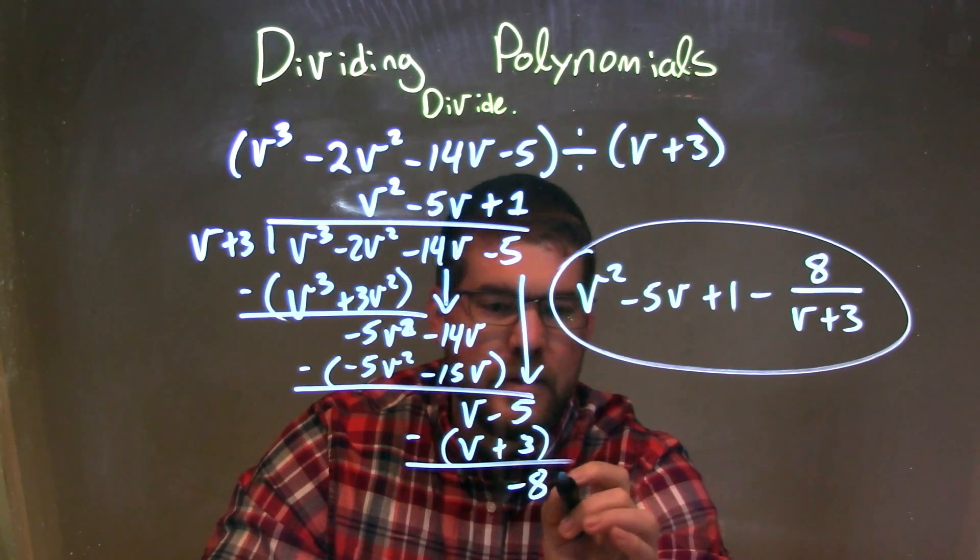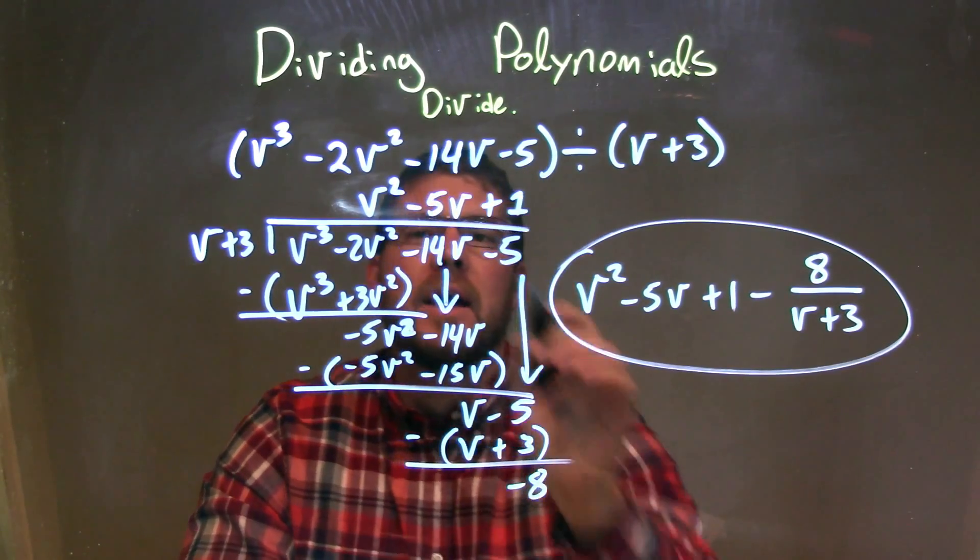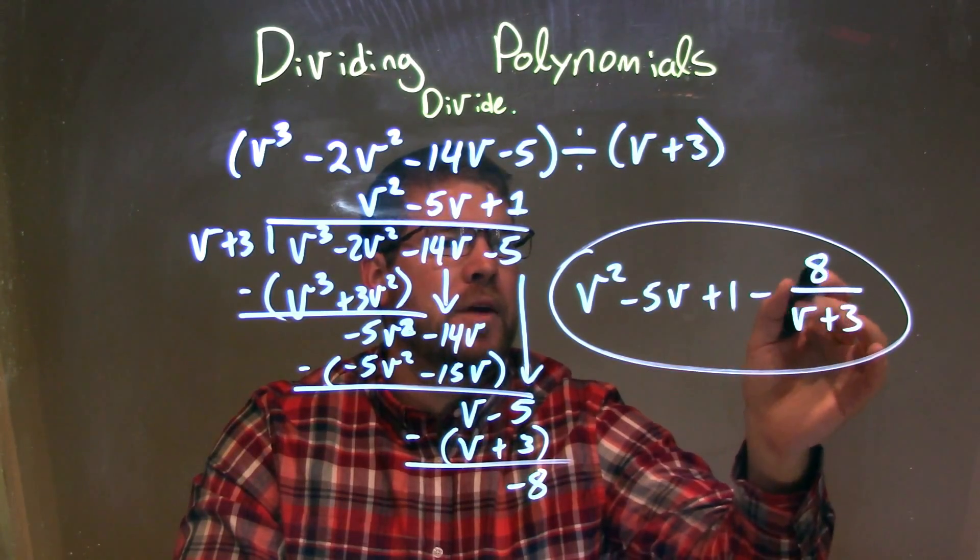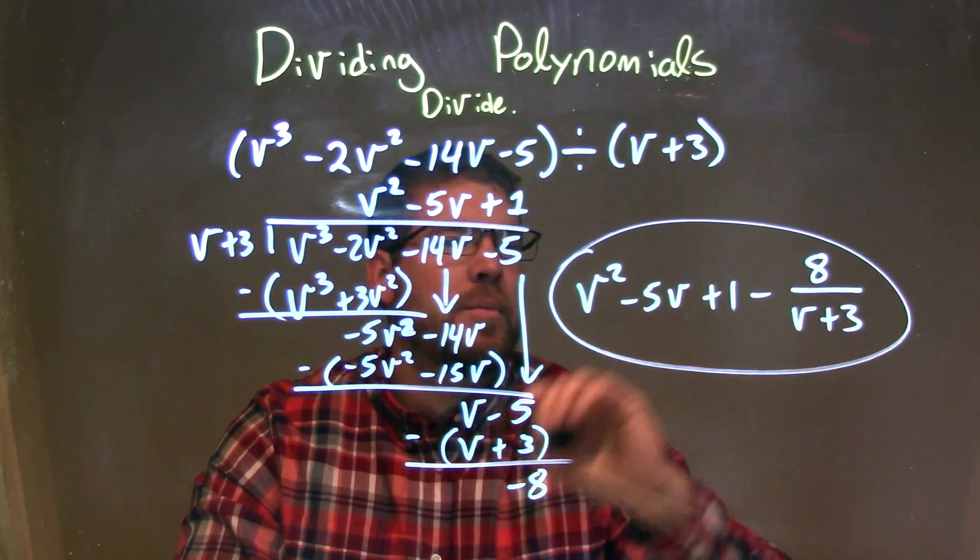So then my final answer here, and then -8 being my remainder, my answer is that v² - 5v + 1, that's written right there, minus my remainder, 8, over my divisor, which is v + 3.